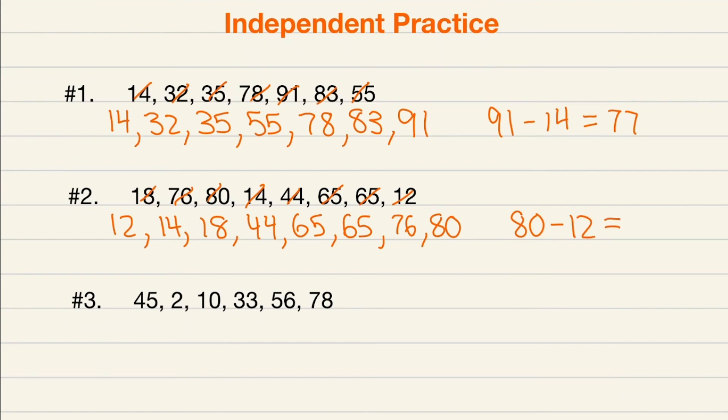Finally our very last one, order them once again. 2, 10, 33, 45, two 56s, and finally 78. Let's take our largest number minus our smallest number which is 2, and we're going to get a range of 76.